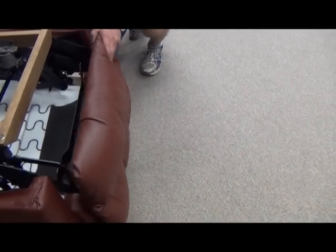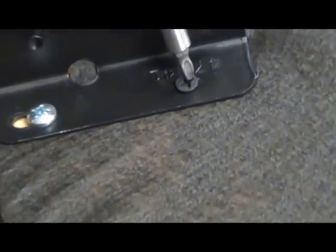Once you have the recliner opened, you'll notice there are four screws. Begin by removing the wood screws from the front side of the kickout, one on each side.